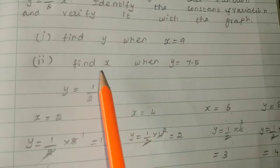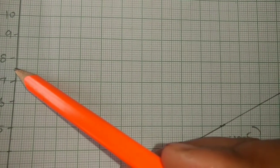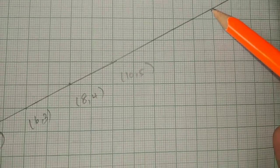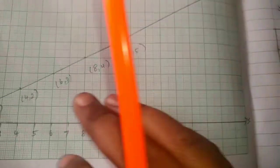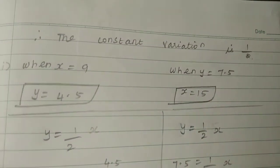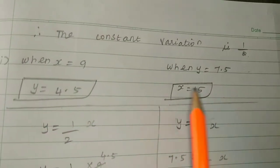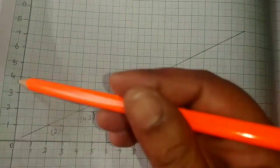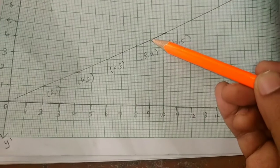To find x when y equals 7.5: go to y equal to 7.5 on the y-axis, draw a horizontal line to meet the graph, then read down to the x-axis to find the corresponding x value.